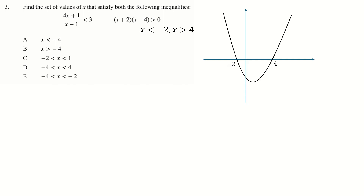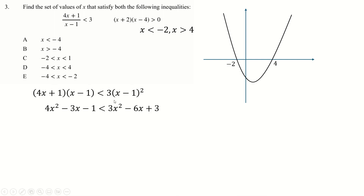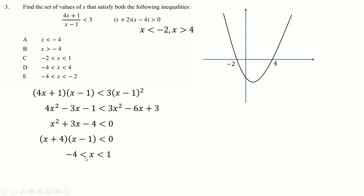You could do this case by case, but the approach I'll use — because it's good practice — is to multiply both sides by (x − 1)². If I multiply by (x − 1)² I can't be multiplying by a negative number, so the inequality definitely holds. One factor on the left cancels, leaving one. Expand and rearrange, then factorize. Roots at minus 4 and plus 1 — we're less than zero so we're between the roots. Combining both conditions, x is between minus 4 and minus 2, so our answer is E.